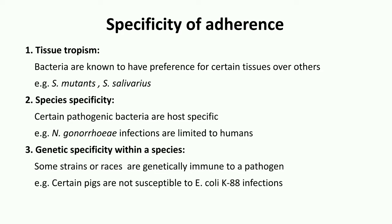Genetic specificity within a species refers to the capability of certain strains or races within a species which are genetically immune to a pathogen. For example, certain species of pigs are not susceptible to E. coli K88 infections, whereas susceptibility to Plasmodium vivax infection — malaria — is dependent on the presence of the Duffy antigen present on the red blood cells of the host. Although many other explanations are possible, these observations explain the existence of specific interactions between microorganisms and eukaryotic tissue surfaces which allow microorganisms to become established on the host surface.